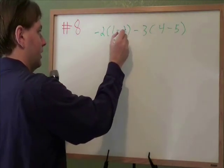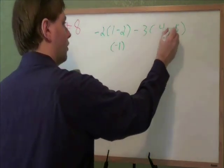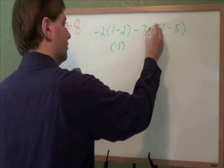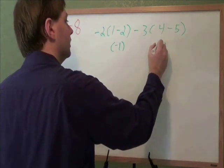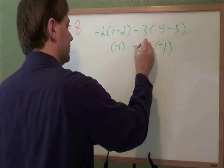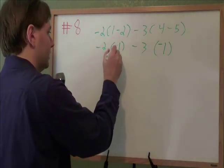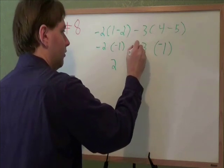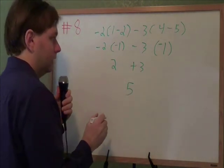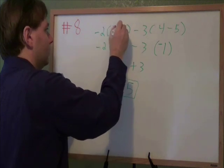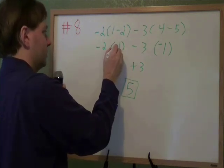On this problem, we want to start by working out the insides of the parentheses. 1 minus 2 is negative 1. 4 minus 5, there are different signs. The 4 is positive. The 5 is negative. So you subtract. 5 minus 4 is 1. And the bigger number was negative, that 5 was negative. So that's a negative 1. Everything else, that minus, that 3, that negative 2, they all stay the same. From here, you multiply. Negative 2 times negative 1 is positive 2. Negative 3 times negative 1 is positive 3. And then 2 plus 3 is 5. Now you might be wondering, how come we didn't distribute like the last problem? Well, we could have, but it would have been a lot harder. Here we can actually just subtract and figure out the parentheses. If you can do that, distributing would only make it harder.